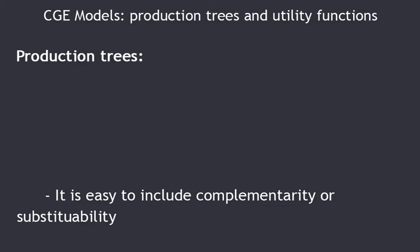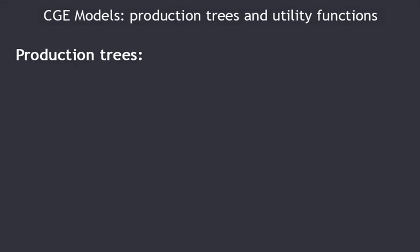The idea is to first draw a production tree, then to translate it into equations. As a reminder, we presented production in each sector as a Leontief function of total value added and total intermediate consumption. A Leontief function introduces the idea of complementarity. Total intermediate consumption is also a Leontief function of intermediate consumption of each good in each sector. Value added is a Cobb-Douglas function of capital and labor, which introduces the idea that the value shares of capital and labor are constant as production changes.